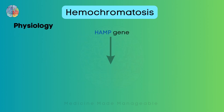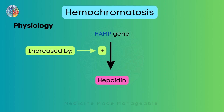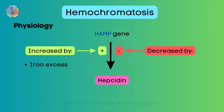Now our body is very smart — the production of hepcidin is very carefully regulated. It is increased in certain conditions and decreased in others. In iron excess, hepcidin production increases because if there is already iron in the body, you don't need more iron, so you have to inhibit its uptake. Opposite to this, the production of hepcidin decreases in iron deficiency because the body needs to absorb iron, and this will be done when ferroportin is not inhibited by hepcidin.